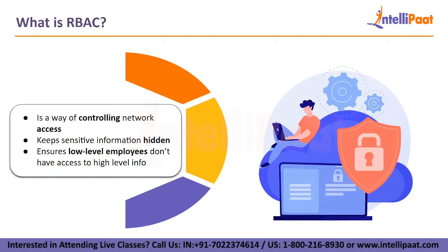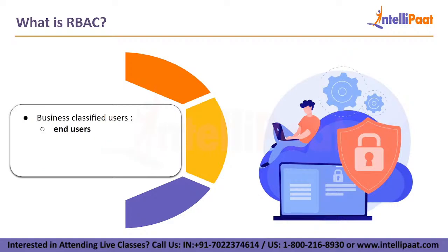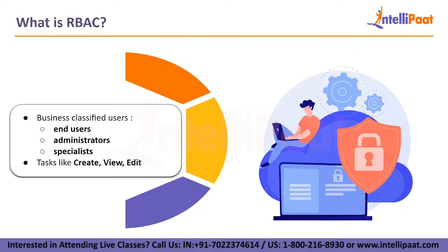The rights provided to an employee are determined by their job in the business, ensuring that lower-level employees do not have access to sensitive information or conduct high-level duties. Roles are determined by numerous criteria in the role-based access control data model, including authorization, responsibility, and job expertise. As a result, businesses can classify users as end users, administrators, or specialists. Furthermore, computer resources can be restricted to certain tasks such as creating, viewing, or editing files.